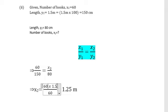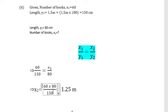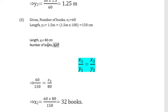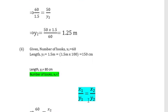Solve the equation for x2 using cross multiplication: x2 equals 60 multiplied by 80, divided by 150. If you calculate this, 60 multiplied by 80 divided by 150 gives 32. The unit is books, so the answer is 32 books. That is the answer for number 2.